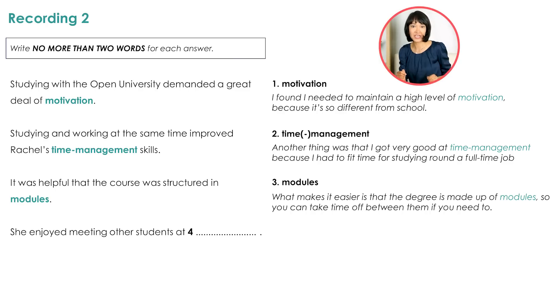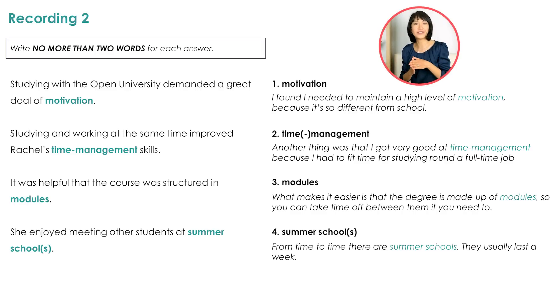And the last question: From time to time, there are summer schools. They usually last a week. They were clearly talking about summer schools in plural. However, both summer school and summer schools are correct answers. Put them into the sentence: She enjoyed meeting other students at summer school or summer schools. Both are correct.